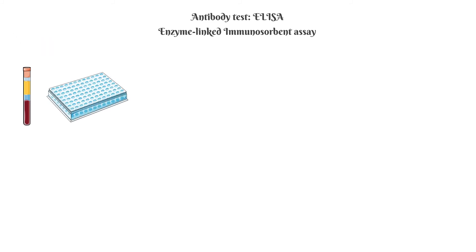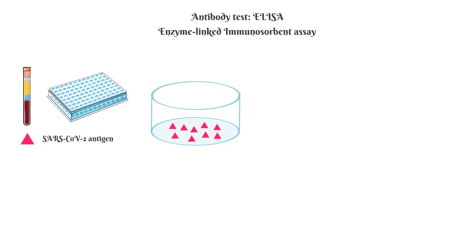The second antibody test is the ELISA, which means enzyme-linked immunosorbent assay, and works in a similar way but takes more time and is done in a laboratory. A sample of serum or plasma is used for this test. The assay occurs in the well of a microplate. If we zoom into one of the wells, we see that the surface is coated with the recombinant SARS-CoV-2 antigen. If there are antibodies against this particular coronavirus antigen present in the sample, then an antigen-antibody complex is formed.